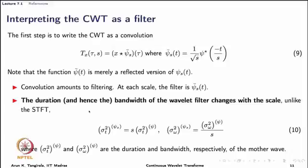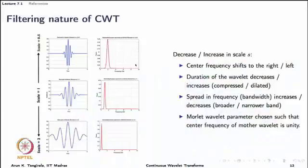The most important feature of this filter is that the duration and bandwidth change with scale, unlike in the short-time Fourier transform. The squared duration of the wavelet is related to the duration of the mother wave through the scaling parameter S, and the bandwidth of the wavelet is 1 over S times the bandwidth of the mother wave. As we stretch, bandwidth becomes narrower but duration becomes longer; as we compress, the vice versa happens.